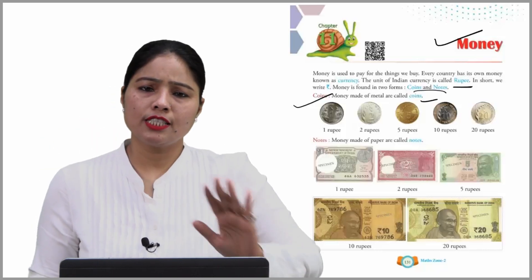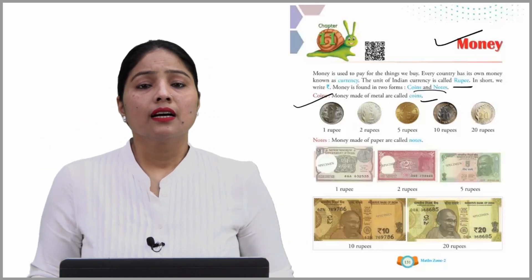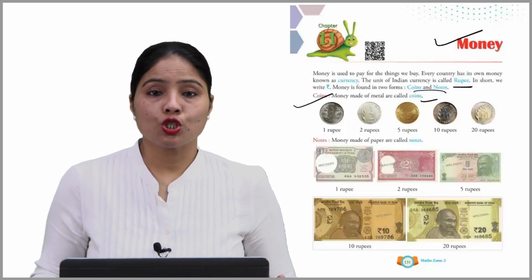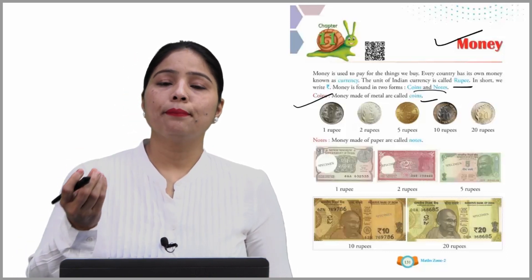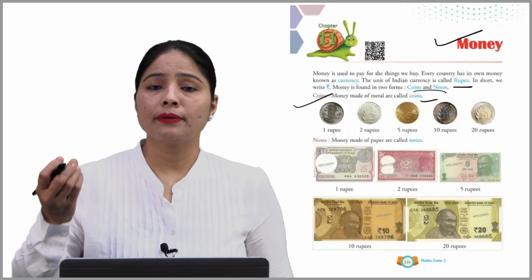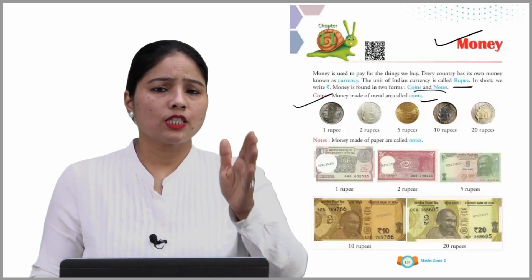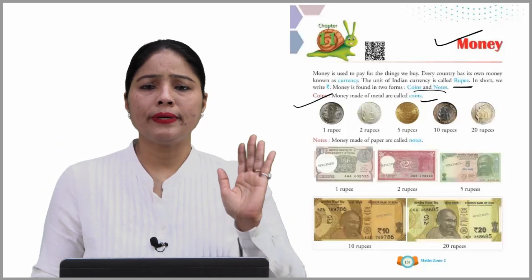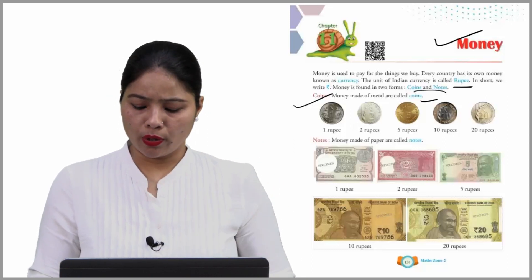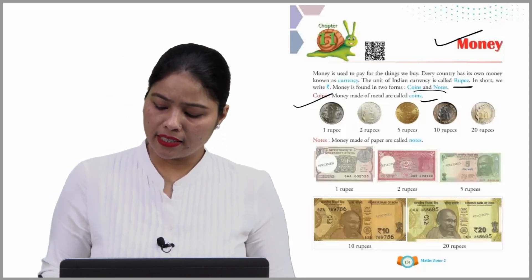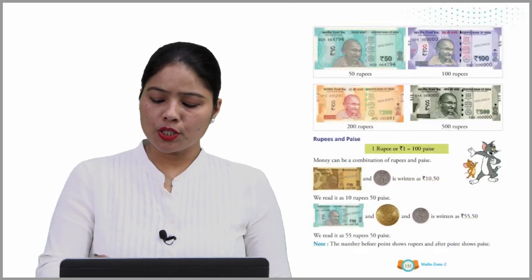Notes - money made of paper are called notes. This is one rupee note, this is two rupees, this is five rupees note, and so on. These are the notes. I hope you understood well, what is coins and what is notes.